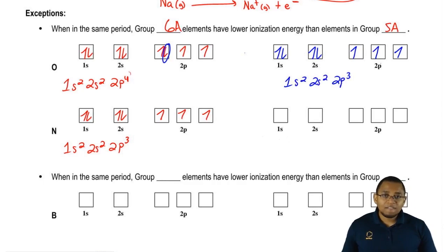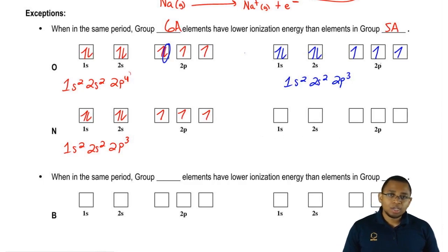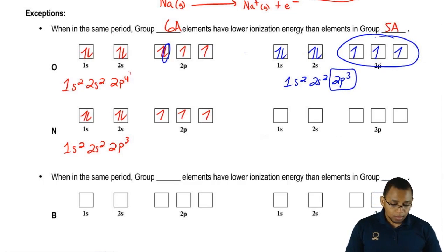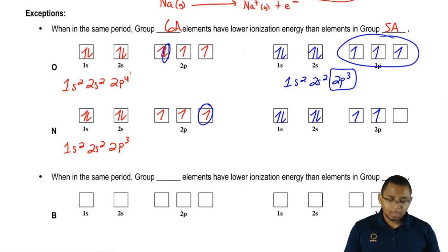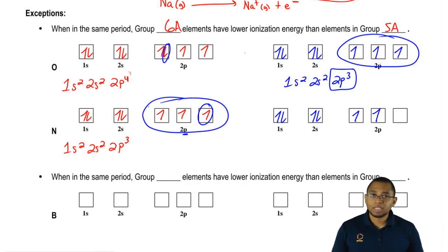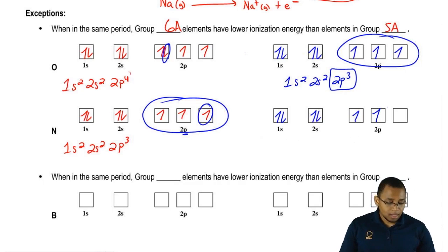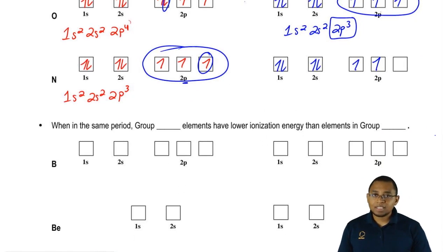It's best if the P subshell, just like D, is totally half-filled or totally filled. By removing that electron from oxygen, oxygen becomes half-filled, which is more favorable. For nitrogen, which started as half-filled, removing the last electron added leaves it no longer half-filled — that's less favorable. That's why oxygen actually has a lower first ionization energy than nitrogen.